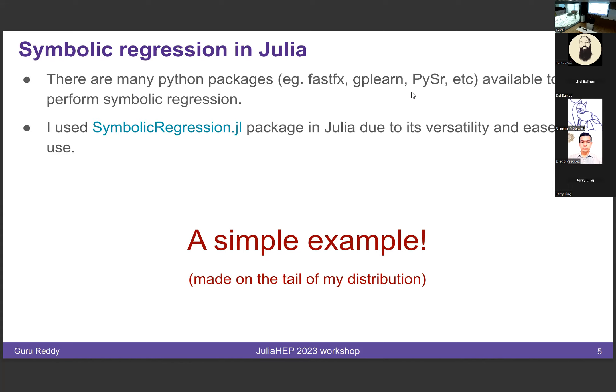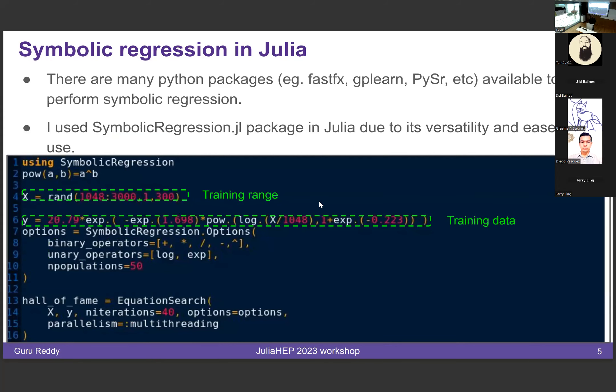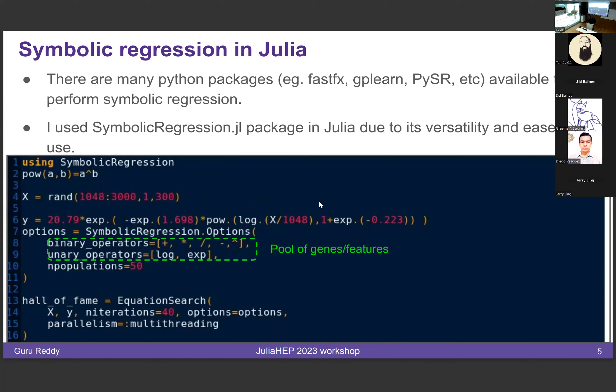Then I came across this package and it was a good decision. Here's a small sample piece of code. The training range varies from 1048 to 3000, and there are 300 data points in it. The training data is the tail part of the piecewise function I used. Here you can see the pool of genes — the available features include addition, subtraction, and other basic operations, as well as operators like log and exponential, and I also defined some trigonometric functions to make it more complex.